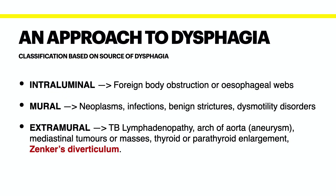When classifying sources of dysphagia, it's helpful to approach it by breaking it down into intraluminal, mural, or extramural sources. Intraluminal sources of dysphagia include a foreign body obstruction, most commonly in children, but in adults it must be investigated further as it may be associated with a functional cause such as achalasia.